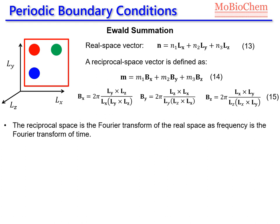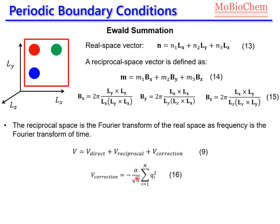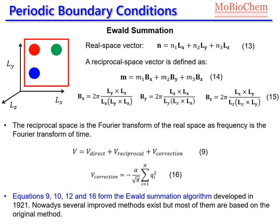We can say that the reciprocal space is the Fourier transform of the real space, as for example the frequency is the Fourier transform of the time. We need to compute part of the Coulomb interaction in the Ewald summation method using the reciprocal space. Finally, coming back to equation 9, the last term we need to compute is a correction, called the correction potential, which depends on the width of the Gaussians we are applying to shield the point charges in our system. Equations 9, 10, 12, and 16 form the Ewald summation algorithm, which nowadays has been improved several times with new formulations.